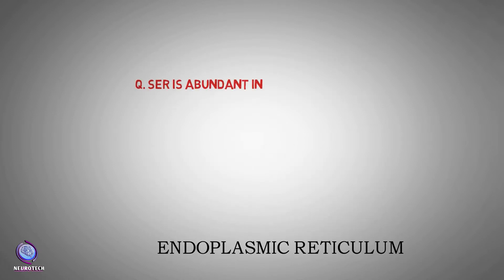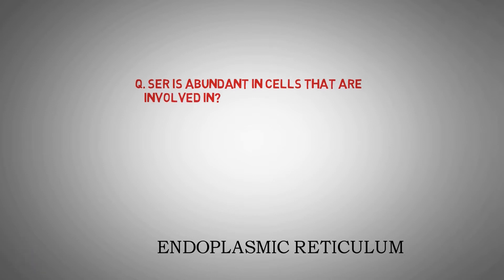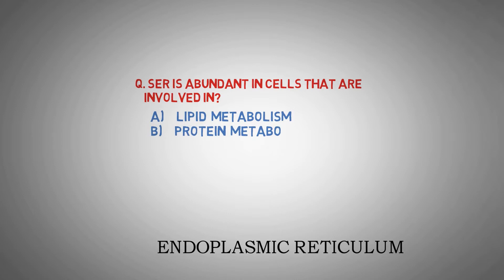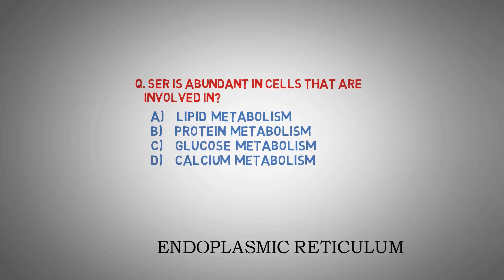Before starting this topic, answer the question. The smooth endoplasmic reticulum is abundant in cells that are involved in: A. Lipid metabolism, B. Protein metabolism, C. Glucose metabolism, and D. Calcium metabolism. Answer your question below.